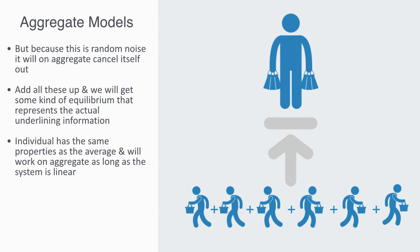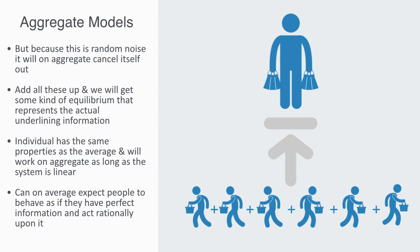The net result of all of this is that we can, on average, expect people to behave as if they have perfect information and act rationally upon it. Rational expectations hypothesis is a necessary condition to obtain internal logical consistency in stochastic dynamic aggregate models in economics. All of this will of course only work if we're dealing with a linear system.